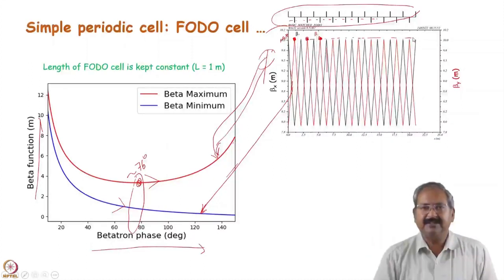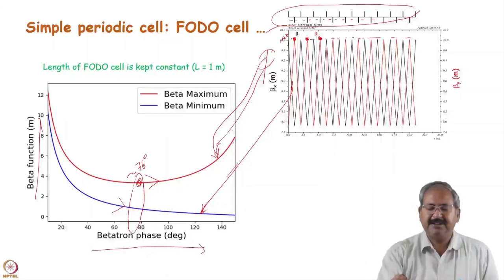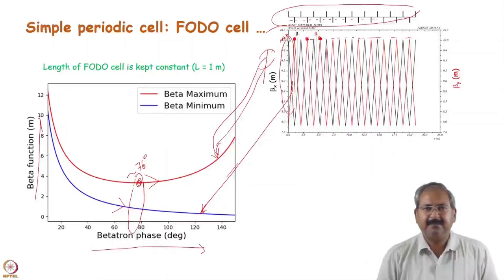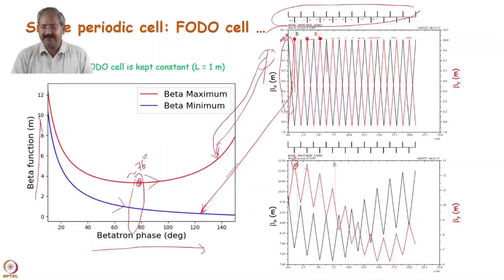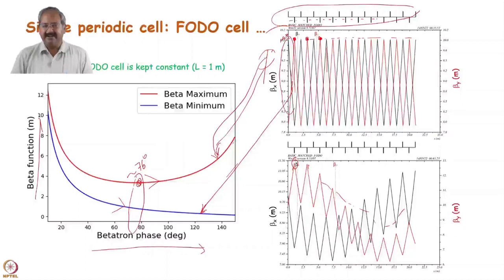Instead, if we choose some initial beta and alpha other than the matched value, then the periodic solution will not be there and some other solution will appear, which will look like this. You can see that the maximum value of beta is also varying here. So beam sizes will not be smooth in this case and they will vary.